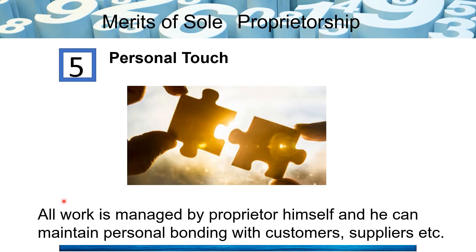Next is personal touch. The sole proprietor manages his work on his own, so the people he deals with — his customers, suppliers, and the public — can be given personal attention. This person maintains personal bonding with customers and suppliers, which always brings certain benefits to the business. All work is managed by the proprietor himself, enabling him to maintain these personal relationships.